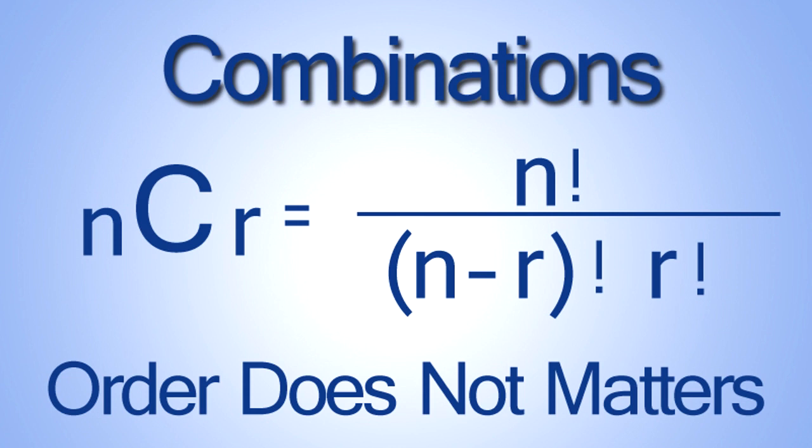Combination notation is also written as little n, capital C, and little r, n-c-r.